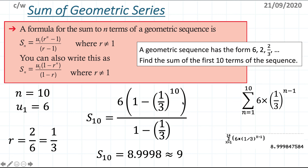In summary, the sum of a geometric series is quite straightforward — just make sure you have all the required values: u1, r, and n, and substitute them into the formula wherever required.